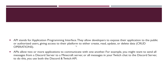An API stands for Application Program Interface and allows developers to expose their application to the public or authorized users, giving access to their platform to perform CRUD operations such as creating, reading, updating, or deleting. APIs allow two or more applications to communicate with one another. For example, you might want to send all messages from a Discord server to a Minecraft server, or all messages in your Twitch chat to a Discord server. For that, you would need both the Discord API as well as the Twitch API.